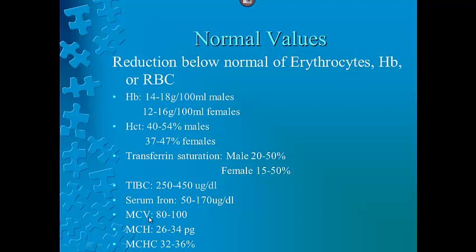Mean corpuscular volume gives you the size of the cell, with a normal size of 80–100. When discussing anemia, if the patient is within the normal value, they have a normocytic type of disease process. If MCV is less than 80, it is microcytic — reduced size. If MCV is greater than 100, it is macrocytic — big size.